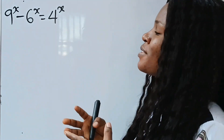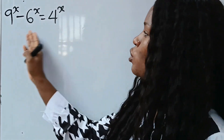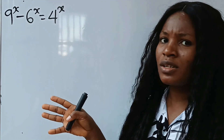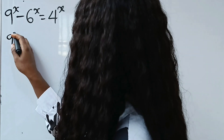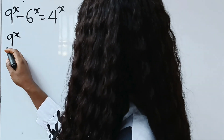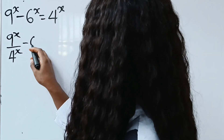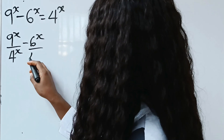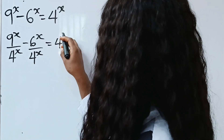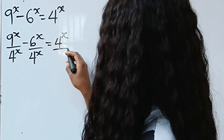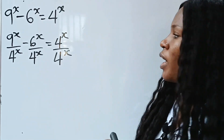I've been looking at it and the first thing I did was to divide by 4. So I did 9 to the power of x divided by 4 to the power of x, minus 6 to the power of x divided by 4 to the power of x, is equal to 4 to the power of x divided by 4 to the power of x.